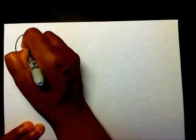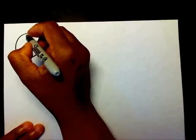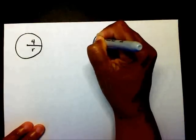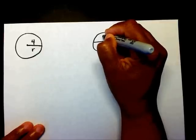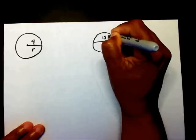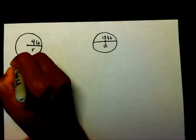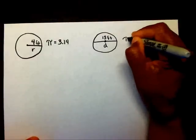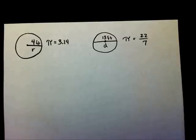Now let me give you two problems to work. The radius here is going to be 4 feet. And in this problem, the diameter is going to be 18 feet. For the first problem use pi equals 3.14, and for the second problem pi will equal 22 over 7. Please pause the video while you work these problems.